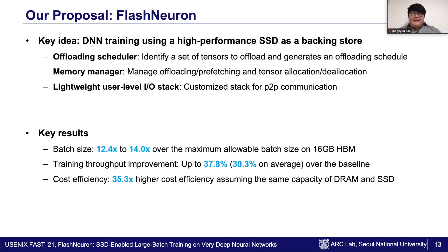Our work exploits three key ideas to design the efficient SSD-backed system. First, we design the offloading scheduler to fully utilize the scarce SSD read/write bandwidths. Second, we orchestrate tensor uploading and prefetching at runtime using a memory manager. Finally, we implement a lightweight IO stack for direct communication between SSDs and GPU. As a result, Flash in Neuron increases the trainable batch size by 12.4 to 14 times compared to the baseline using 16GB HBM, and improves training throughput by up to 37.8% by increasing the batch size. Flash in Neuron also provides 35.3 times higher cost efficiency, in dollars per gigabyte, for a training system.